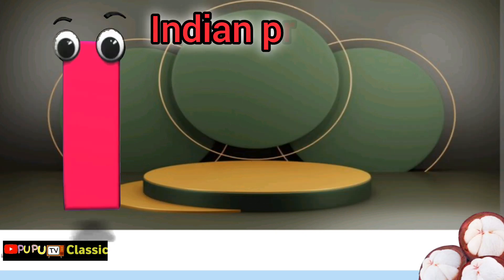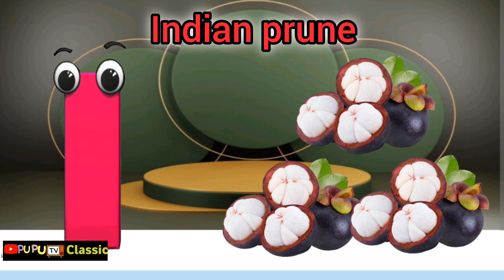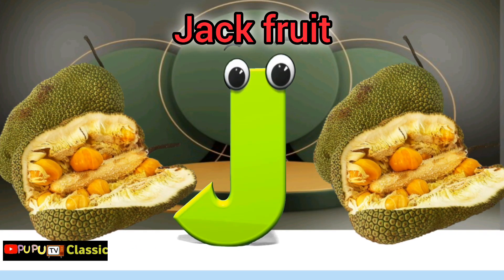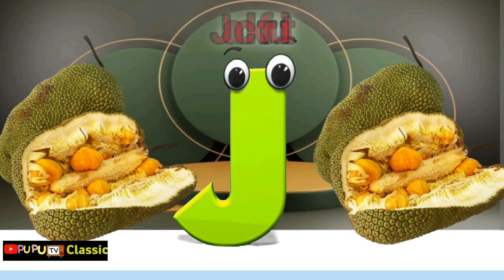I is for Indian prune, e-e-Indian prune. J is for jackfruit, j-j-jackfruit.